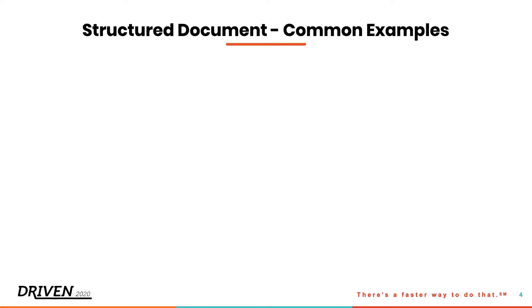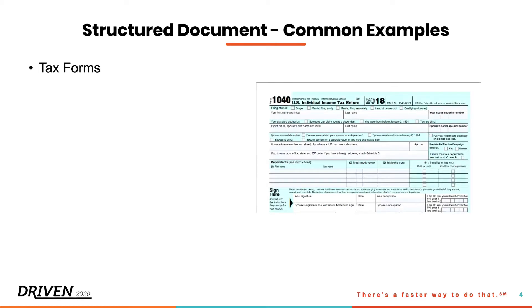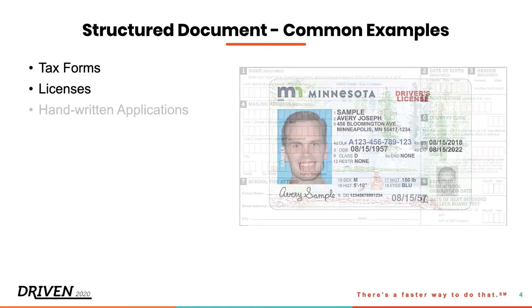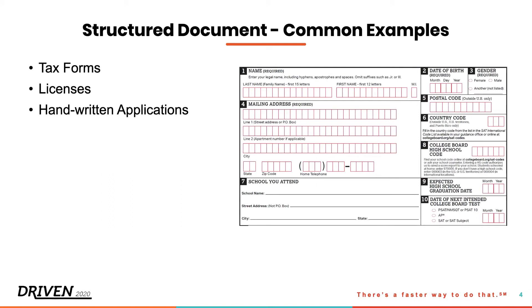Common examples of structured documents are tax forms or pretty much any kind of government document, licenses, passports, and even handwritten applications where the boxes are defined and used to put a letter in each box. What sets a structured document apart from the others is that you always expect a value, like last name, to always fall within some distance away from an anchor point and be contained within a certain amount of space within that document.